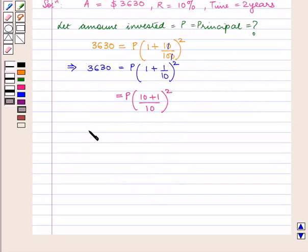This implies 3,630 equals P times 11 by 10 times 11 by 10. Now here we need to calculate the value of P.